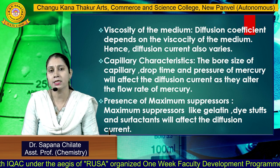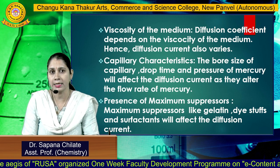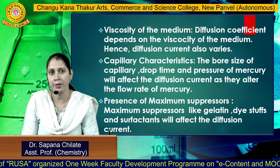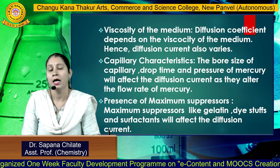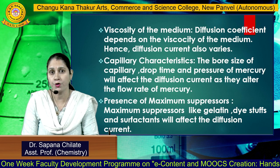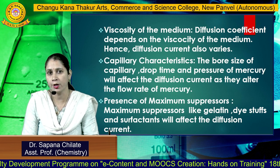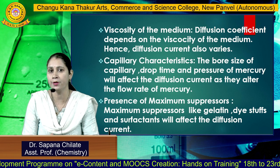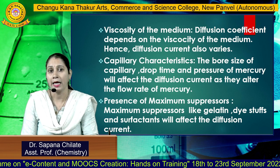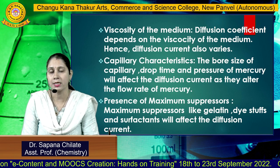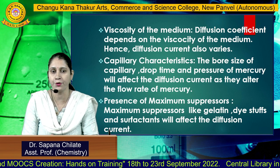Capillary characteristics are also important. The capillary should dip inside the solution and the size of the capillary should be minimum. The bowl size of the capillary and the drop time, which should be between 2 to 7 seconds, and the pressure of mercury — all these things can affect the diffusion current. Also, the presence of maximum suppressors like substances such as gelatin, dextrose and surfactants can also affect the diffusion current.